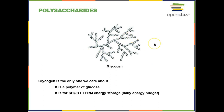If you take a whole bunch of glucose molecules and connect them together in a specific fashion, you make a polysaccharide — a polymer of glucose — called glycogen. This is the only polysaccharide we care about. You want to know that it is your body's short-term energy storage molecule, your daily energy budget. Glucose is the gasoline burning in your engine, and glycogen is your fuel tank — how much fuel you can carry that is readily burned.